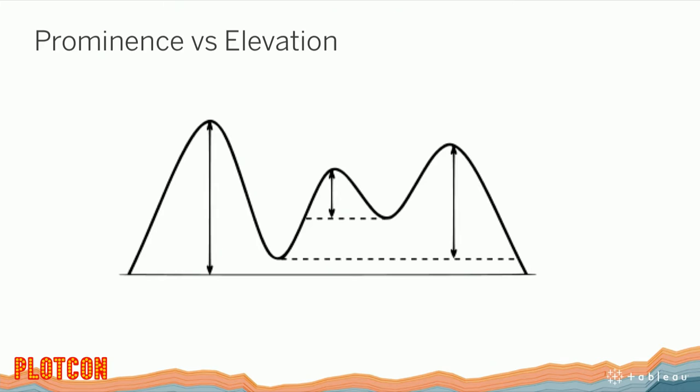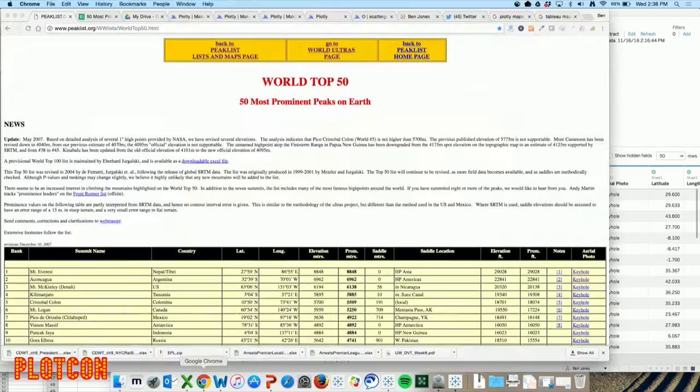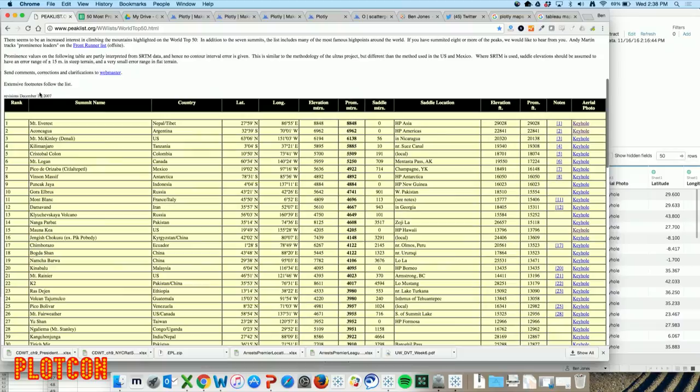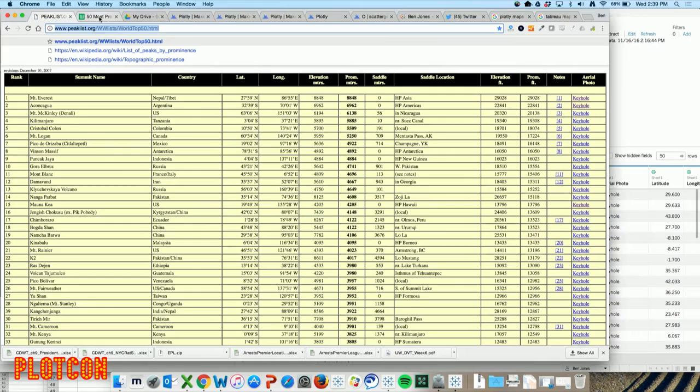Actually Rainier is bigger in the sense that its prominence - the distance from its lowest contour to its peak - is much larger than Whitney's, which technically is at a higher elevation. It's like if someone shorter than me stood on a chair: that's Whitney versus Rainier. We have a little bit of a chip on our shoulder about that in Washington. Whitney stands at a higher overall elevation from sea level, but they're different. It turns out there's a website that creates a table of the 50 most prominent peaks on earth.